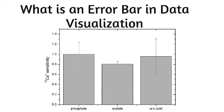Also, depending on the type of data, the length of each pair of error bars tends to be of equal length on both sides. However, if the data is skewed, then the lengths on each side would be unbalanced.